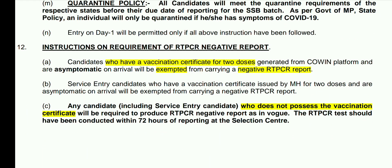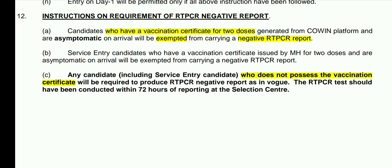Regarding RT-PCR or vaccination certificate: if you have a vaccination certificate for both doses from the CoWIN platform, you are exempted from carrying a negative RT-PCR report. If you do not have a vaccination certificate, you must produce a negative RT-PCR (Reverse Transcription Polymerase Chain Reaction) report. This test must have been conducted within 72 hours of reporting at the SSB center.